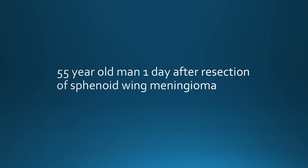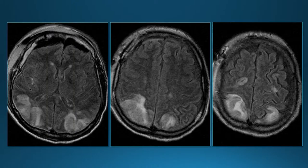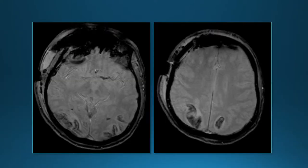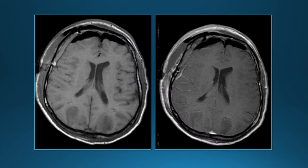Next case: 55-year-old man, one day after resection of a sphenoid wing meningioma. FLAIR images show symmetric areas of abnormality involving the gray matter and subcortical white matter bilaterally. Gradient echo images show bilateral hemorrhage, with the hemorrhage mostly involving the cortex. Pre- and post-contrast images show no enhancement.